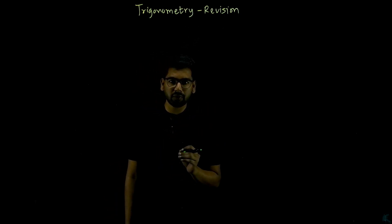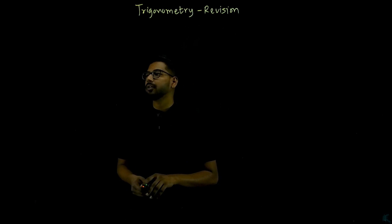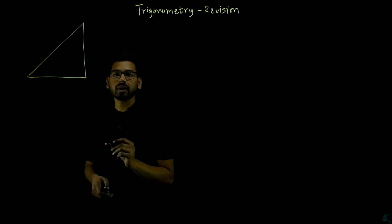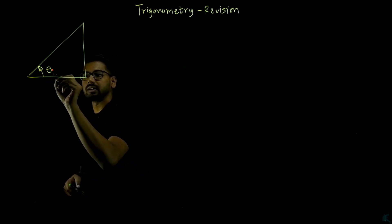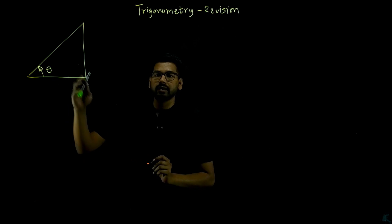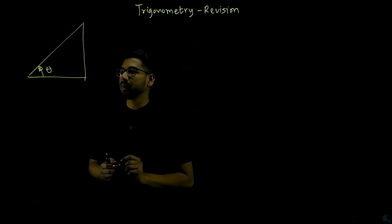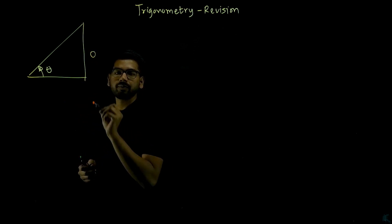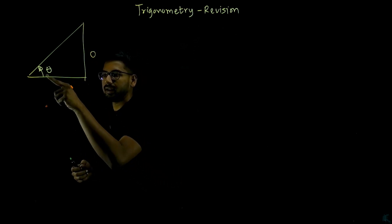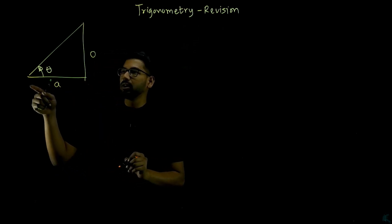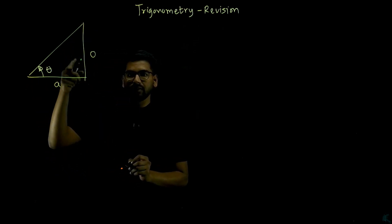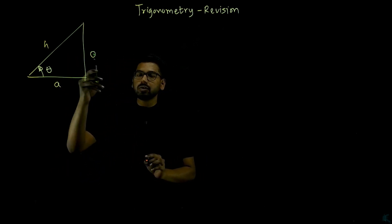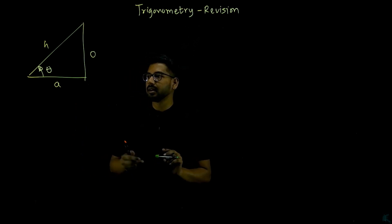We will just revise whatever you have learned in 12th and PUC. We'll start from the right angle triangle. So if you have a right triangle, this is the angle theta. The angle between two sides is 90 degrees. The side opposite to theta is called the opposite side, the side adjacent to the angle is called the adjacent side, and the longer side in the right angle triangle is called the hypotenuse.